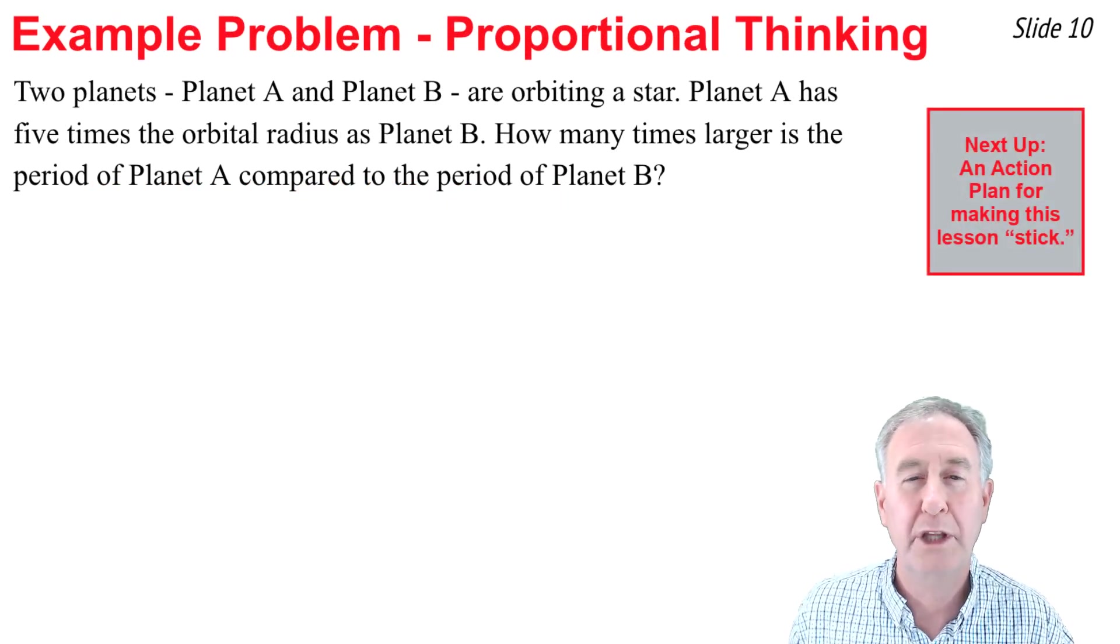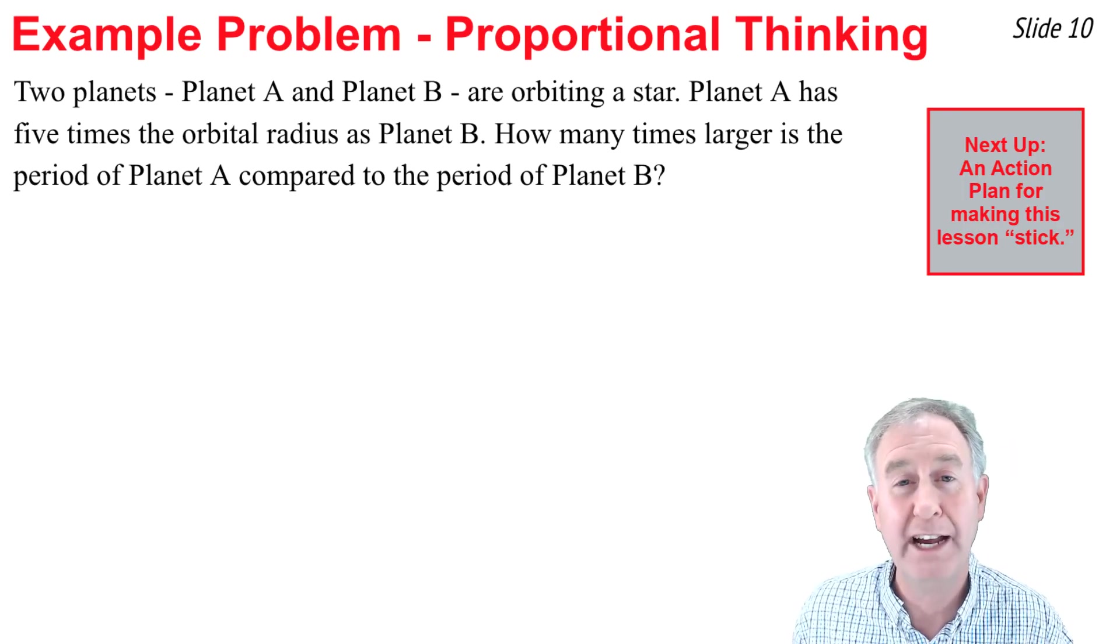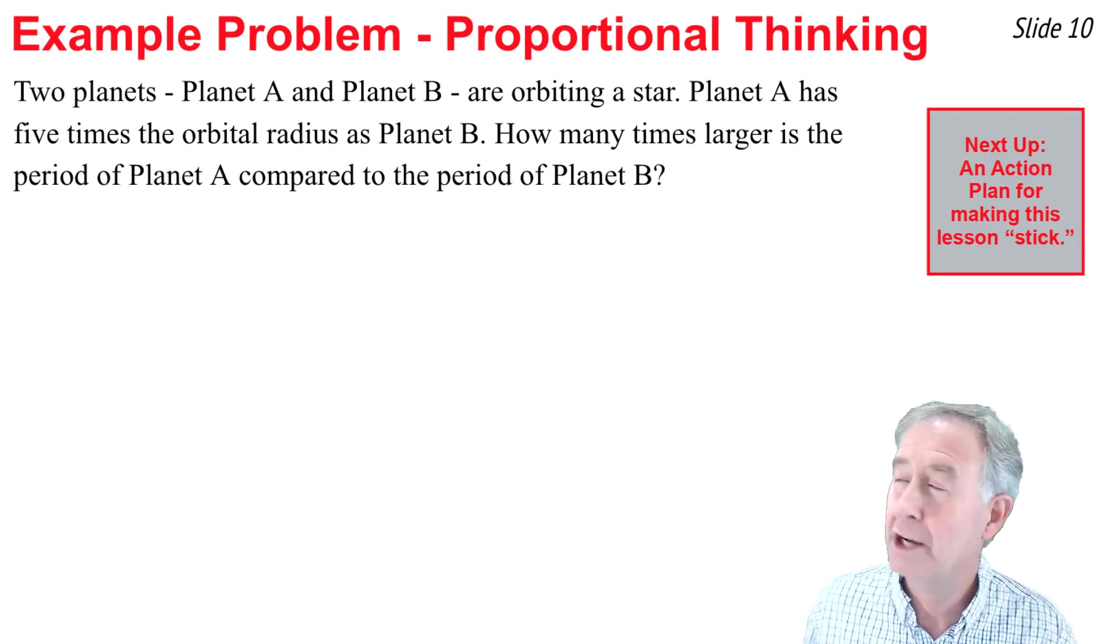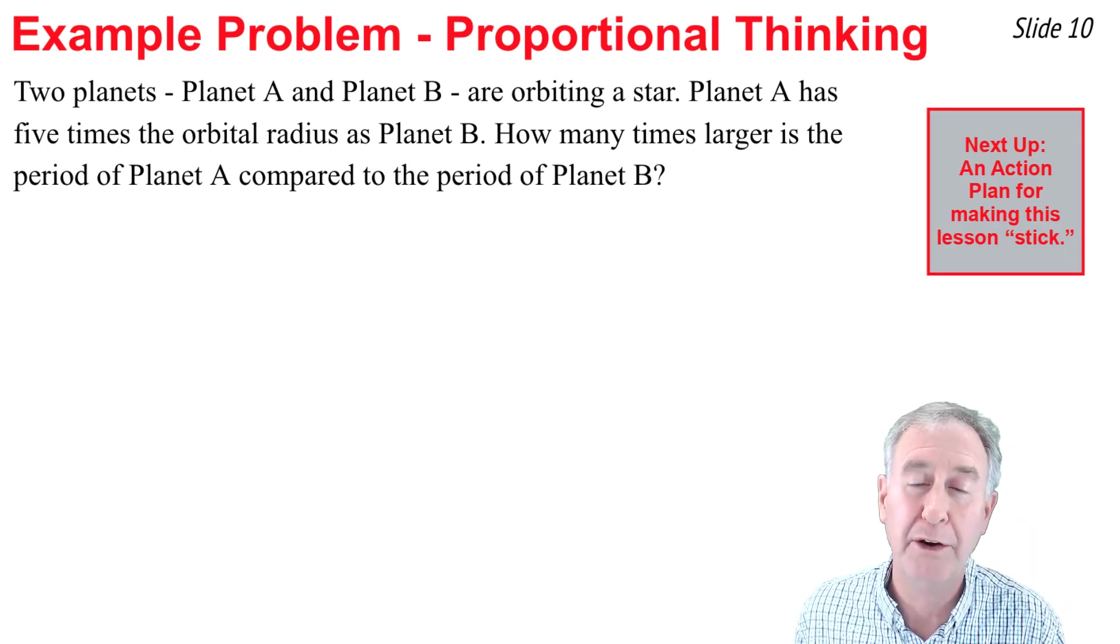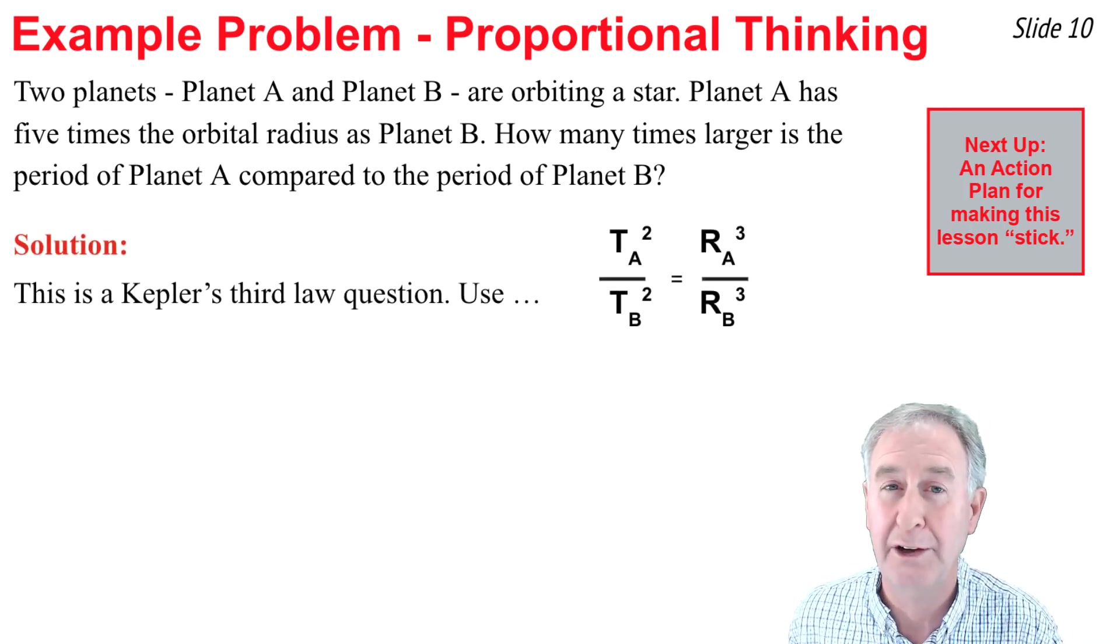Let's do one quick practice problem. Planet A and planet B are both orbiting the same star, and the orbital radius of planet A is five times that of planet B. The question here is how many times greater is the orbital period of planet A compared to planet B?